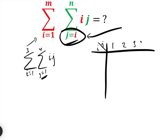What we did was sum from i equals 1 to 3 and j equals 1 to 4 of i times j — this is j equals 1, not j equals i. We had j equals 1, 2, 3, and 4, and i equals 1, 2, and 3. So this was 1 times 1, 1 times 2, 1 times 3, 1 times 4, 2 times 1, and 2 times 2.